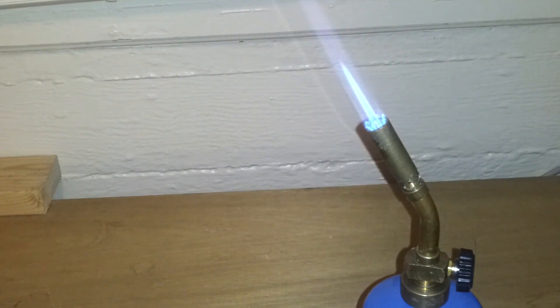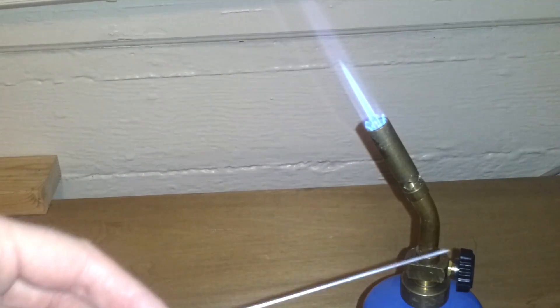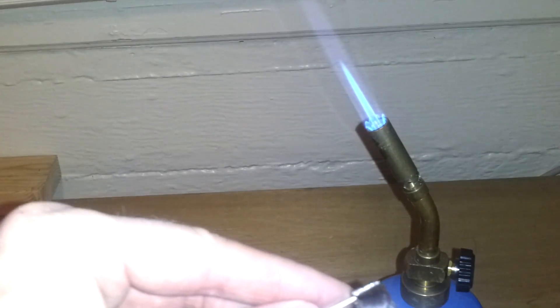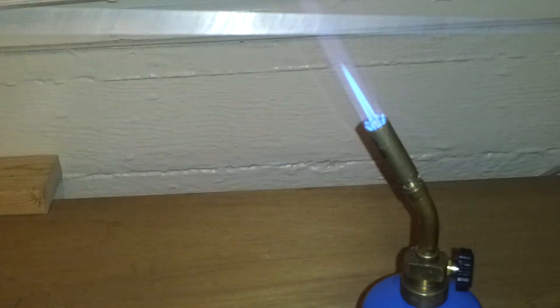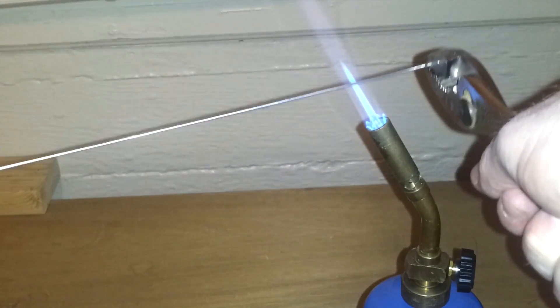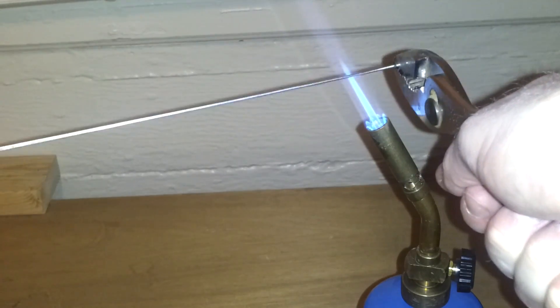Take a propane torch. Take the wire that you just straightened. Take a pair of pliers. And it's easier to hold it this way than this way because the wire is going to be flapping around. So put it in the teeth of the pliers so it's secured. And heat it up until the wire is red hot.